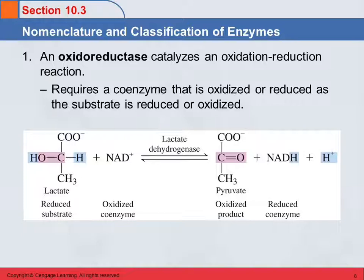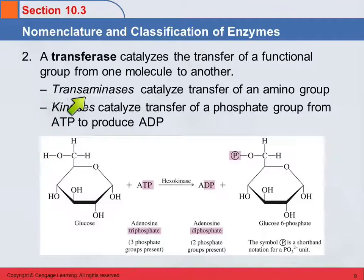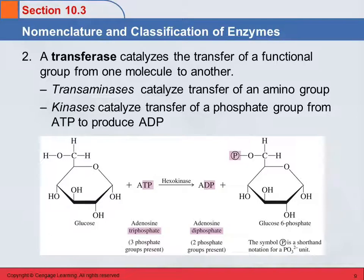Another class is transferases — as the name implies, these involve the transfer of a functional group. There are two main subcategories: transaminases, which transfer an amino group, and kinases, which catalyze the transfer of a phosphate group from ATP to produce ADP. We'll learn more about ATP and ADP when we cover metabolism and energy production.